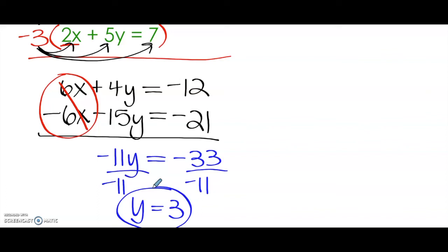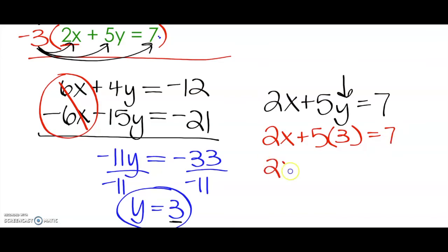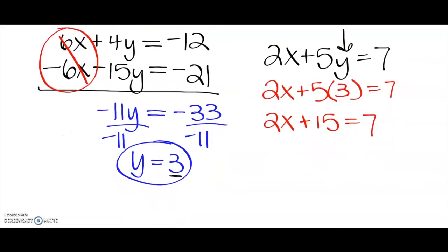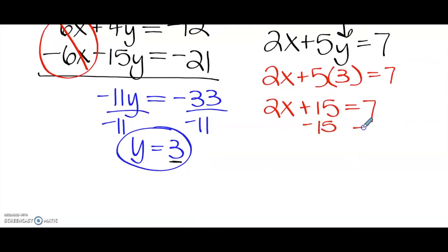Now we do need to substitute back into one of the two original equations to get our x value. I'm going to use the second equation here. 2x plus 5y equals 7. And we are going to substitute 3 in right here for y. So that's going to be 2x plus 5 times 3 equals 7. 2x plus 15 equals 7. We are going to use inverse operations now to solve for x. So subtract 15 from both sides. We are going to get 2x equals negative 8. 7 minus 15 is negative 8. And then divide by 2.